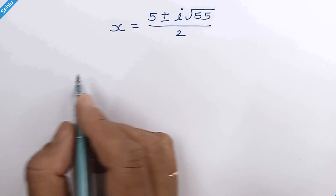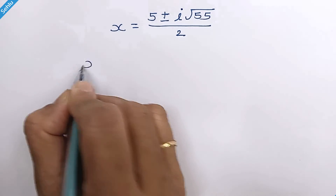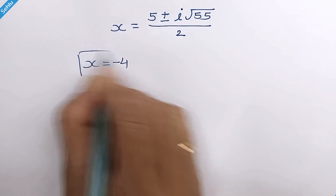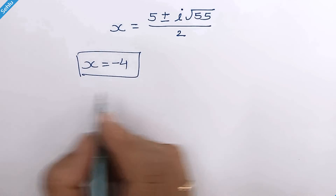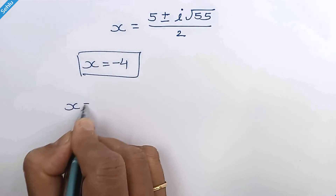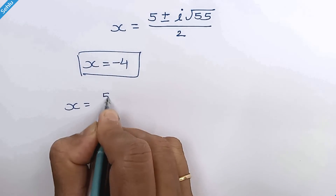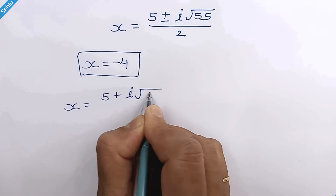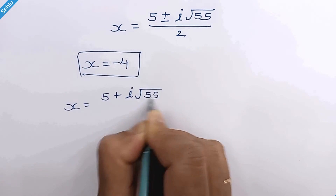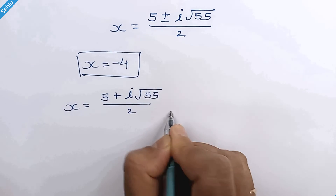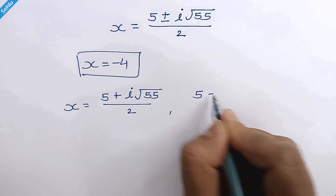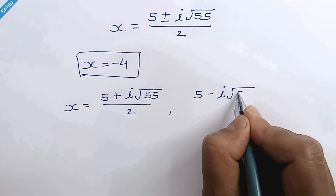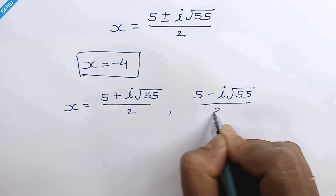So we have one real number x is equal to negative 4, and two imaginary values: 5 plus iota times square root of 55 over 2, and 5 minus iota times square root of 55 over 2.